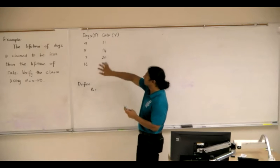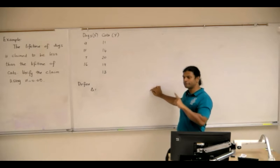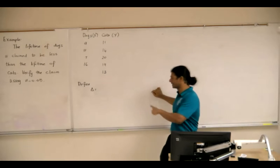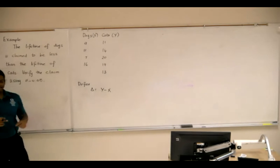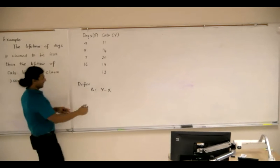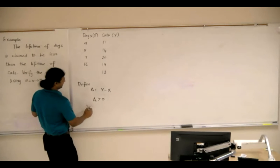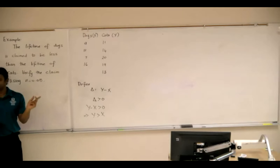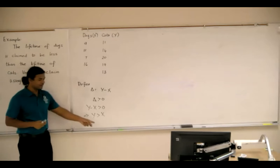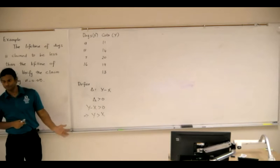So lifetime of dogs is x and y. I'm wanting to come up with a right tail test. So if I define delta to be y minus x, and if the alternative is delta greater than 0, y minus x will be greater than 0, which will indicate y is greater than x. In other words, the lifetime of cats will be greater than the lifetime of dogs. You see how I come up with this?